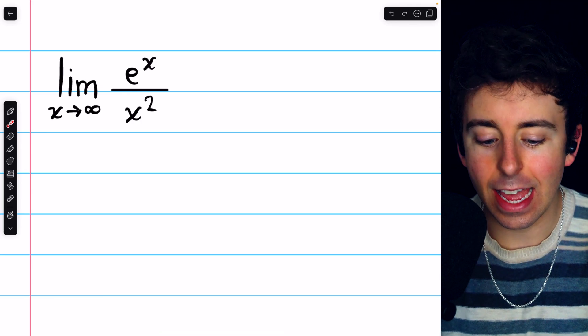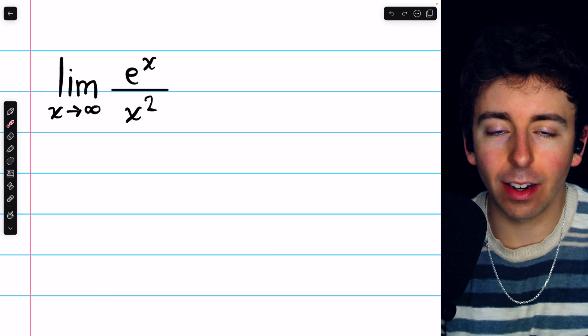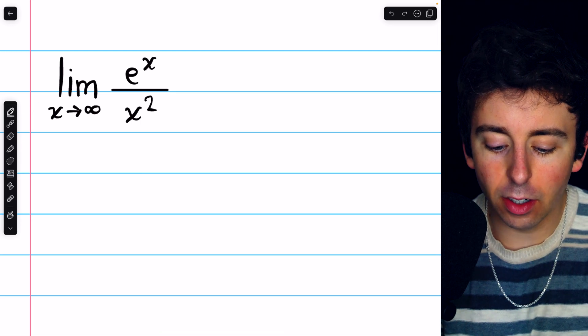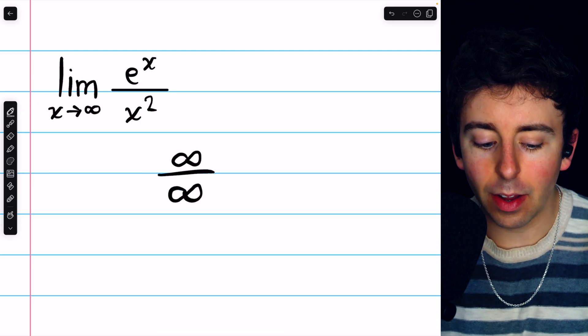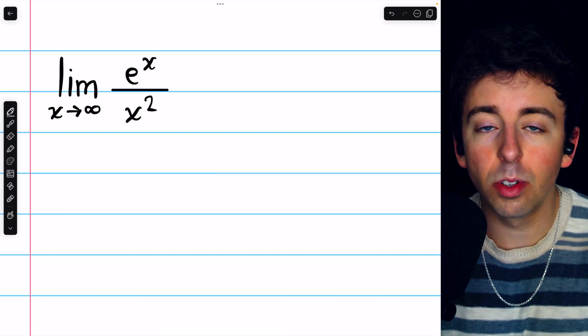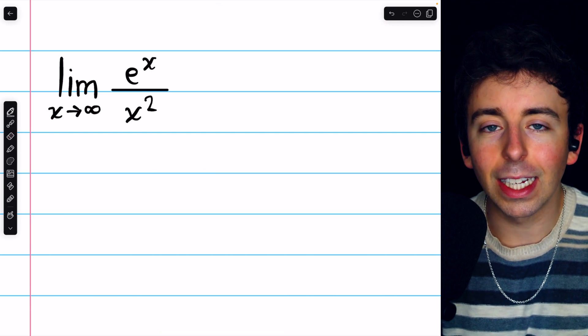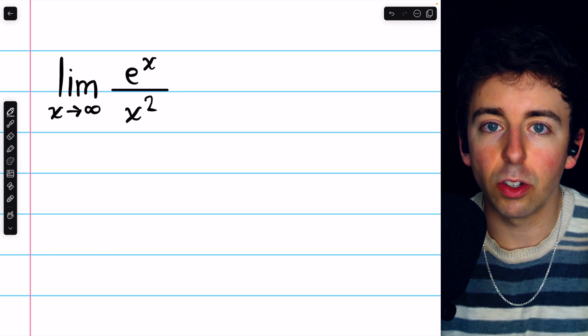When plugging infinity into e to the x over x squared, we get the indeterminate form infinity over infinity. So this is a very straightforward limit to evaluate using L'Hopital's rule. I'll leave a link in the description to my video where we do just that.